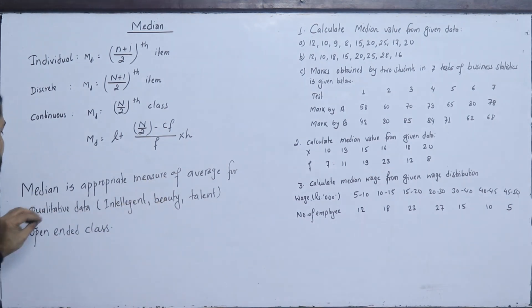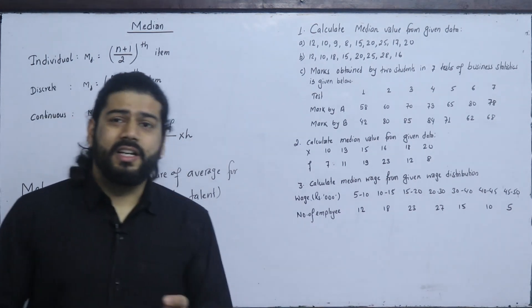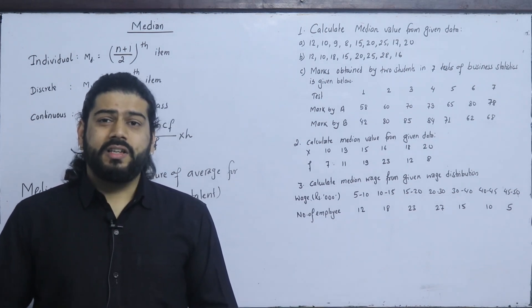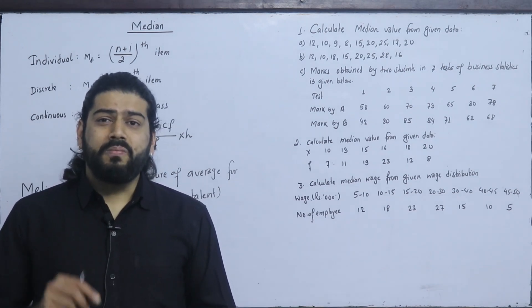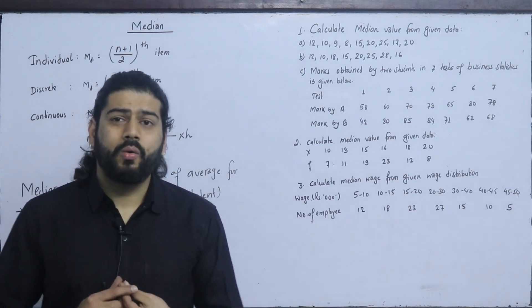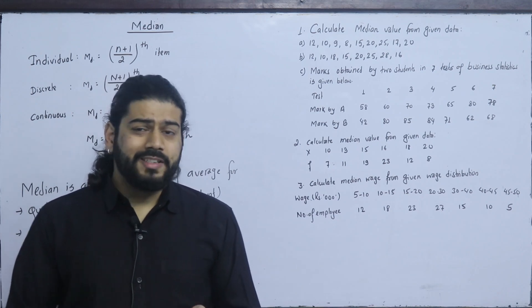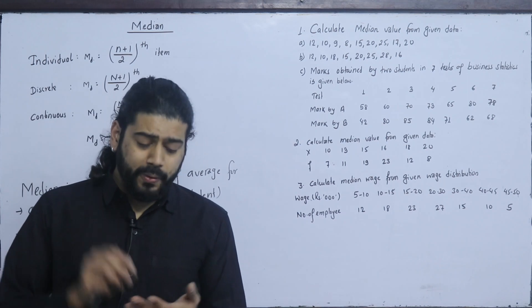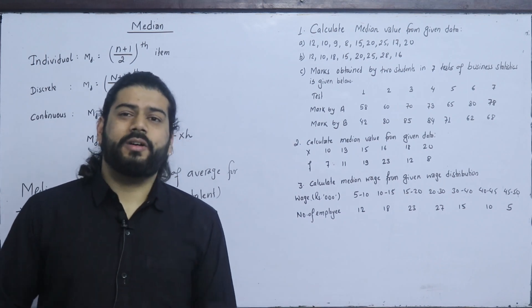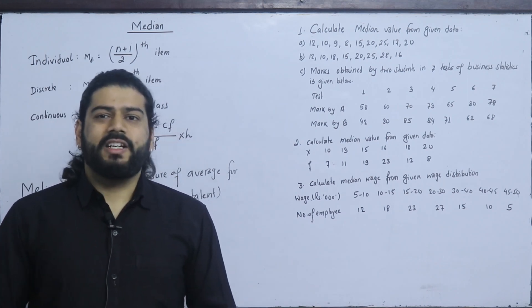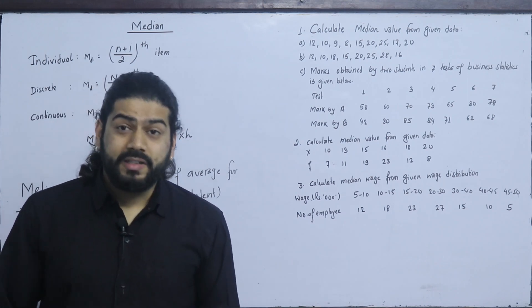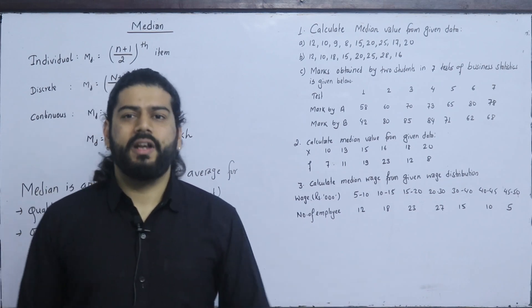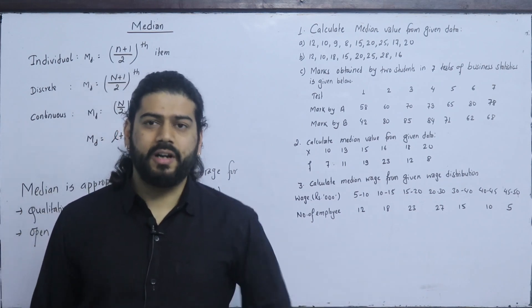But what is qualitative data? Data can be quantitative or qualitative. Quantitative data includes things like salary, expenditure, and income. Qualitative data includes things like intelligence, talent, and beauty. We need to measure these, and median is an appropriate measure of average — a measure of central tendency.